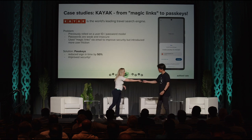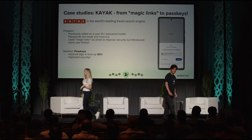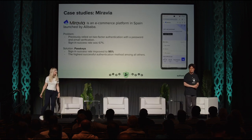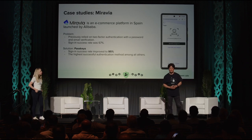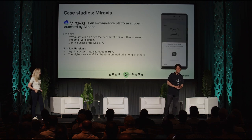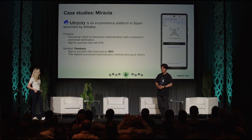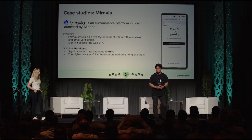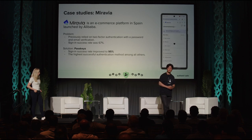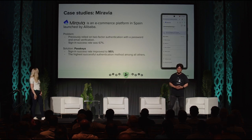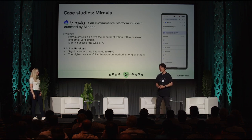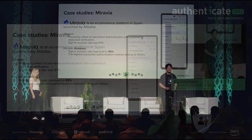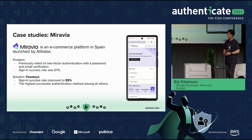Miravio is an e-commerce platform launched by Alibaba for the Spanish market. Initially, they used two-factor authentication with email, which had a sign-in success rate of only 67%. After deploying PassKeys, the sign-in success rate improved to 95% — significantly higher than any other authentication method they offer.